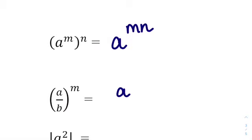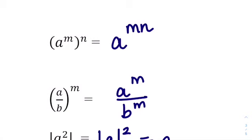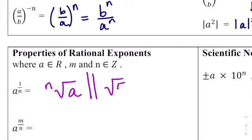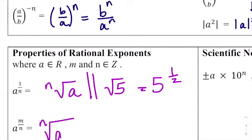A over B, a ratio raised to the M, distributes as A to the M over B to the M. For absolute values, the absolute value of A squared equals the absolute value of A quantity squared, and equals A squared since absolute values are positive. Now, changing exponential form to radicals: A to the 1 over N can be expressed as the Nth root of A. For example, the square root of 5 is 5 to the one half. For A to the M over N, that's the Nth root of A to the M, also written as the Nth root of A, all raised to the M.